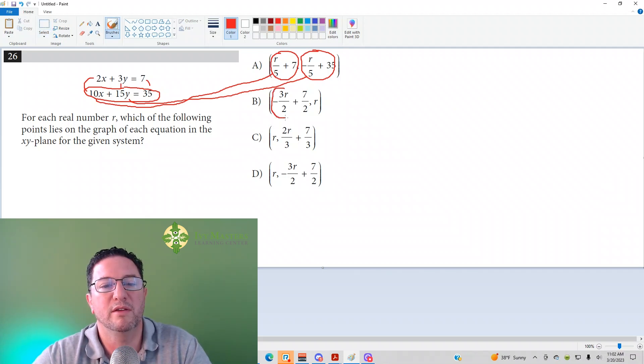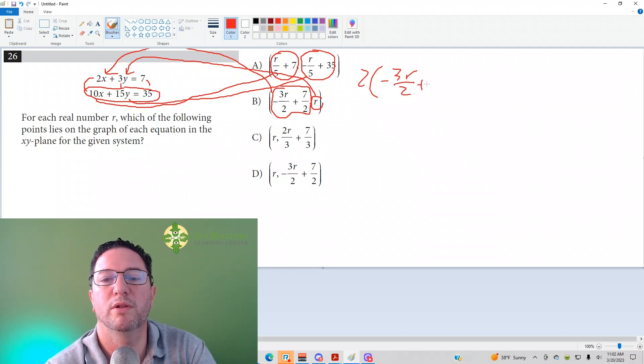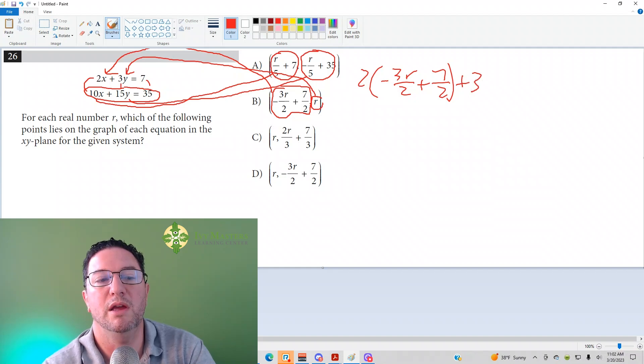Now, apparently, this is a long process. Here's my X. My X is this whole thing. My Y is this. Now, what I could do is I could, again, I could plug into either equation. I'm not going to get a fraction if I plug my X into the first equation. And then I plug my Y into the first equation as well. So that's the one I'm going to use this time. So now I've got 2 times negative 3R over 2 plus 7 over 2, close the parenthesis, plus 3, and in place of Y, I put R equals 7.